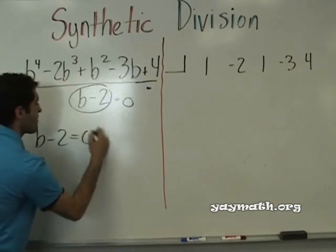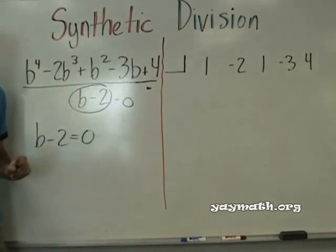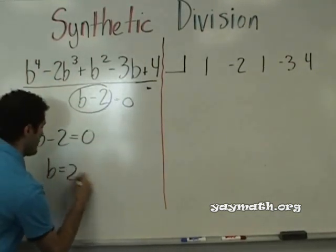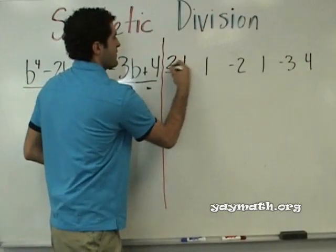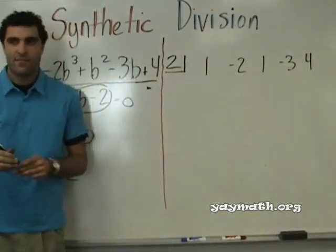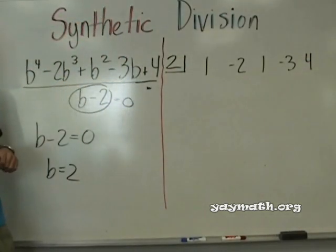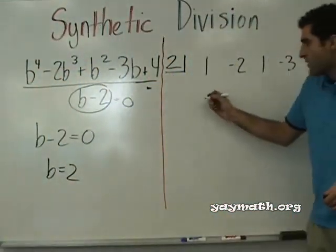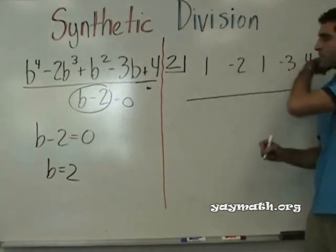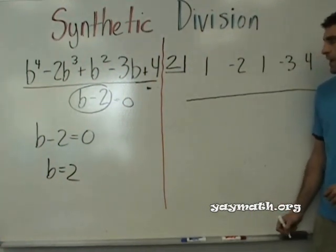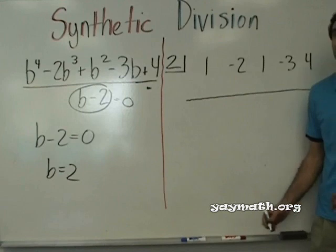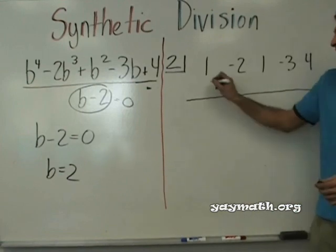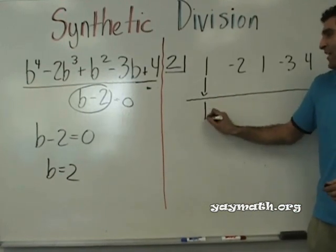So let's do that. b minus 2 equals 0. What's b? b equals 2. So 2 goes in the box. And now we're ready to start. Draw a line with a little space underneath your numbers, please. And we go. Watch what happens now. It's like asparagus. Okay, so bring down the 1.